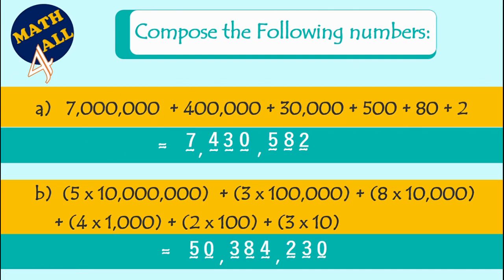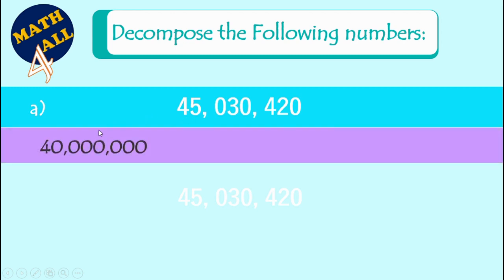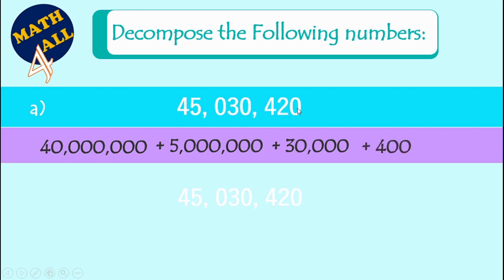Now let's practice on decomposing numbers. Here we go — example A. To decompose numbers, it is so easy: you just need to write the value of each digit. So the value of four is forty millions. The answer will be forty millions plus five millions plus thirty thousand plus four hundred plus twenty. And this is how we decompose this number.